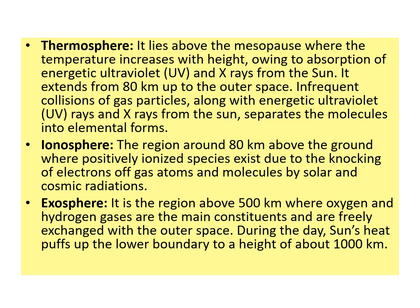The ionosphere is not a particular bound layer. It is basically a region around 80 km above the ground where positively ionized species exist due to the knocking of electrons from gas atoms and molecules by highly energetic solar and cosmic radiations. It does not have a particular bound layer and can extend wherever there are energetic radiations.